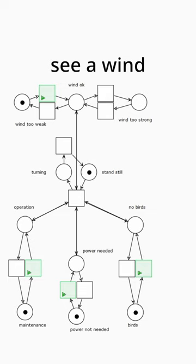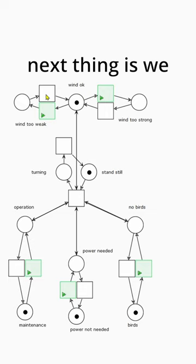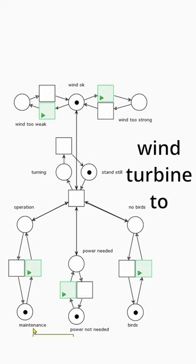So here you can see a wind turbine that is standing still and we want to make it turn. So first of course we need some wind and the next thing is we don't want the wind turbine to be in maintenance mode.